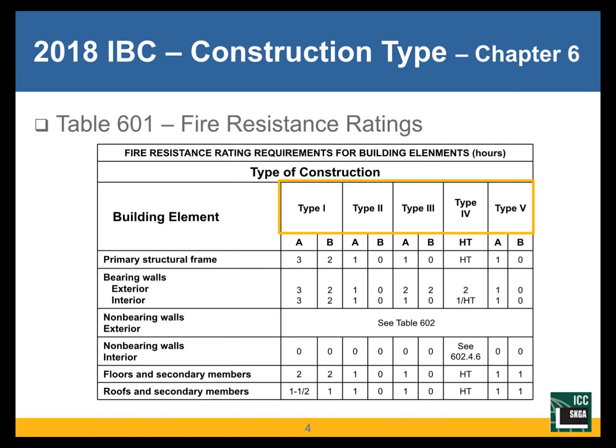When we talk about fire resistance, I always want to start with Table 601 out of Chapter 6 of the IBC. That is the primary part of the code that tells us what fire resistance ratings are required for the structural requirements of the building. Across the top you see Types 1 through 5: Types 1 and 2 are non-combustible construction; Type 3 is a combination of non-combustible and combustible materials; Type 4 is heavy timber construction; and Type 5 is typically combustible construction like wood frame. We're looking at the building elements themselves and what fire resistance ratings are required, focusing mainly on structural frames, floors, and roofs.